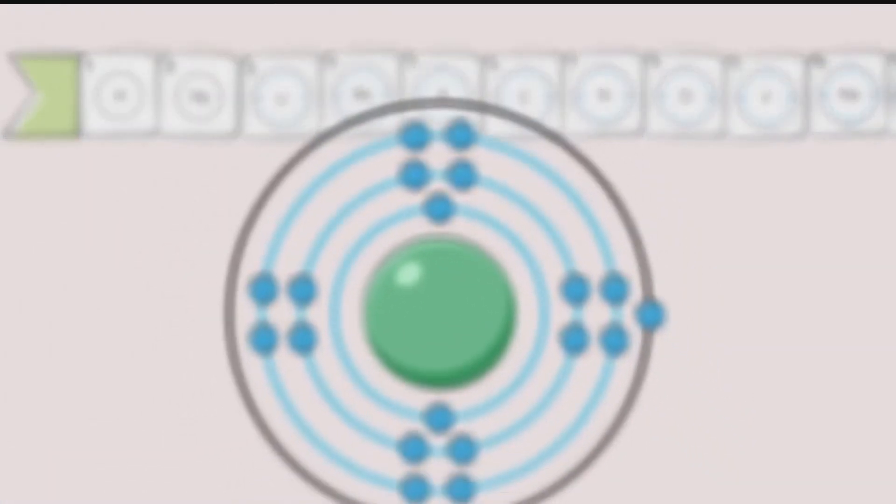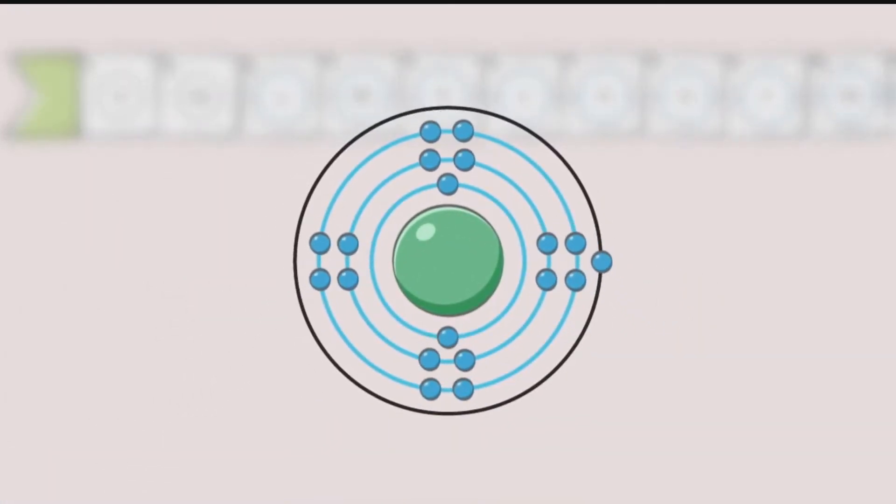Each element also has a unique number of electrons. There is one electron for each proton in a neutral atom. Electrons surround the nucleus in electron shells that exist at discrete energy levels. The lowest energy levels fill with electrons first. The outermost energy level is called the valence shell.